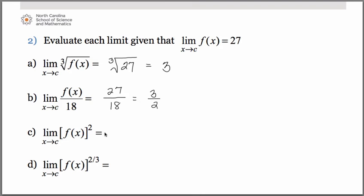In letter c, we want the limit of the function squared, so we simply take the limit, which was 27, and we square that. We can leave it like that or do it out. Unfortunately, I don't have my calculator available.